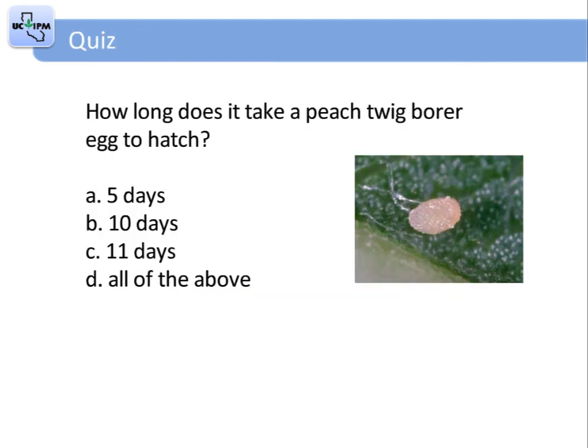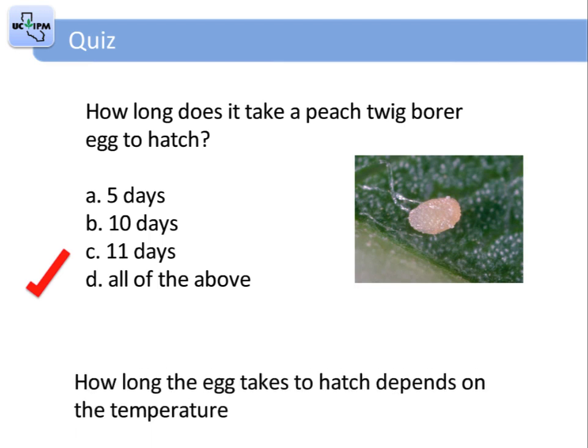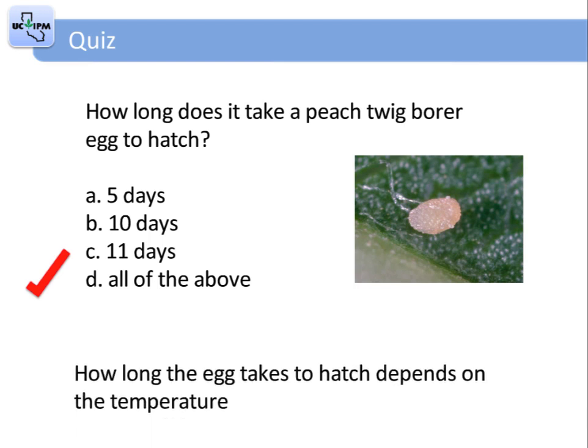So let's take a little quiz. How long does it take for a peach twig borer egg to hatch? Is it 5 days, 10 days, 11 days, or all of the above? That's right — all of the above. Because how long it takes for the caterpillar to get ready to hatch out of the egg depends on the temperature it is exposed to.